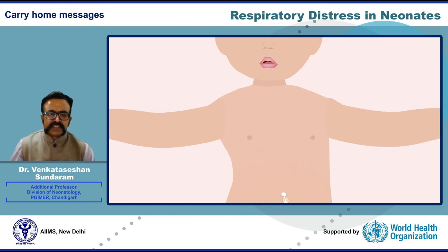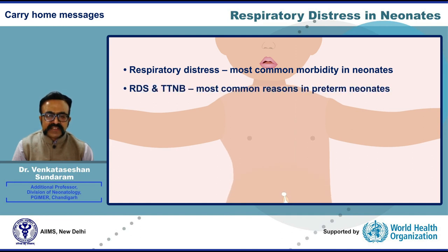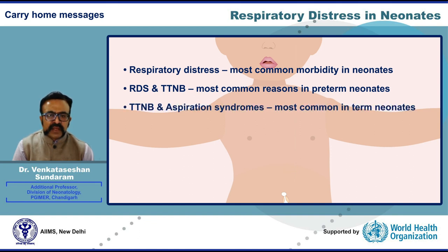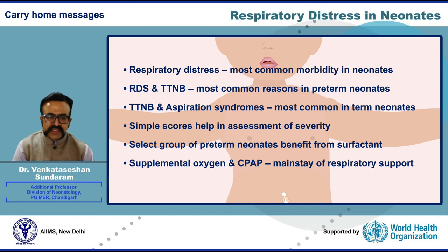Key take-home messages: respiratory distress is the most common morbidity in neonates. RDS and transient tachypnea of the newborn are the most common etiologies in preterm neonates; transient tachypnea and aspiration syndromes are most common in term neonates. Simple scores like the Silverman-Anderson and Downy scores help assess severity. Early CPAP is mainstream treatment, and a select group of preterm neonates benefit from surfactant therapy. Adequate nursing care is crucial for CPAP success, and target saturations must be maintained during oxygen therapy to prevent complications like retinopathy of prematurity.